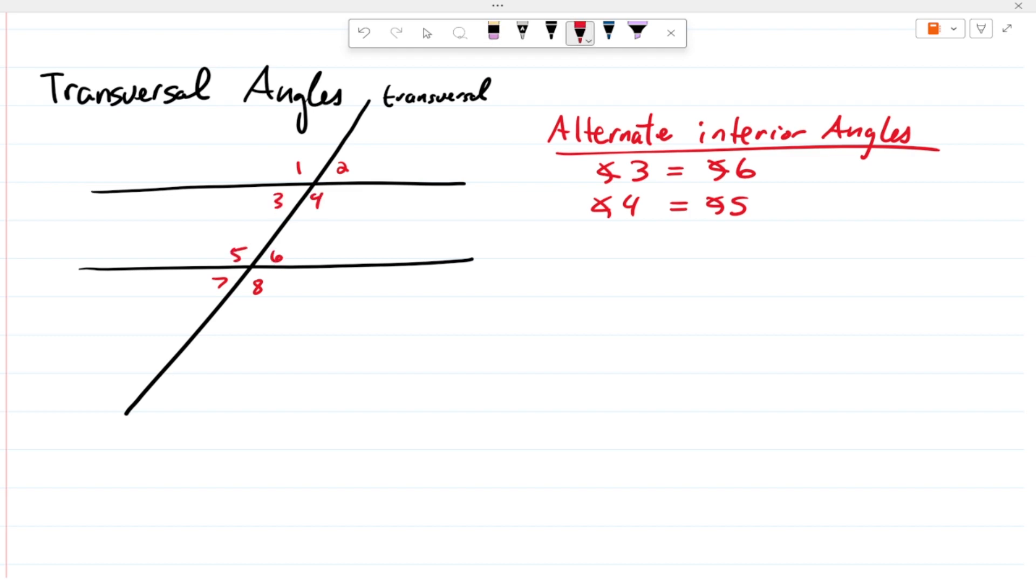Now, if we move on, we're going to have these things called alternate exterior angles. And here are these angles right here: one and eight and then two and seven. So, angle one equals angle eight. Angle two equals angle seven.